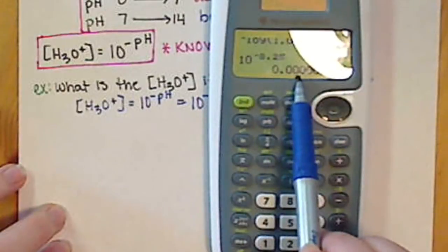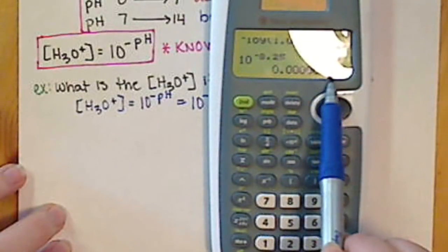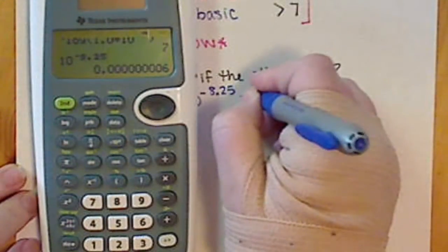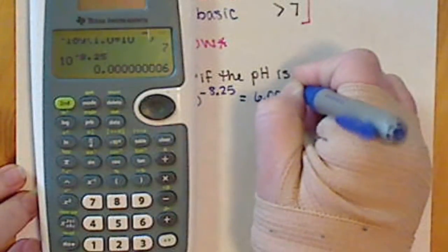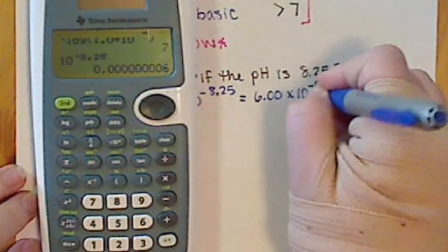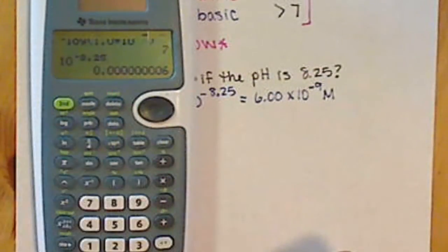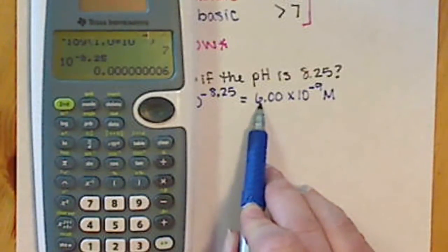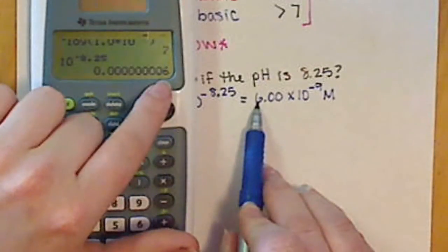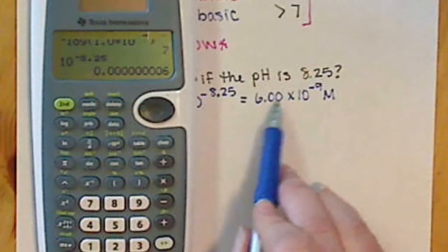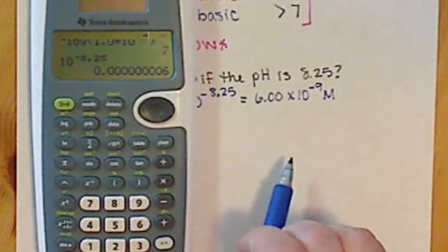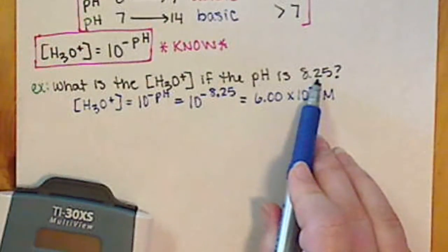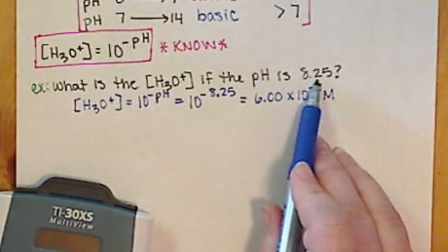Moving the decimal point 9 places to the right gives us approximately 6.00 × 10⁻⁹ molar. I had three significant figures in my pH value, which is why I have three sig figs here. The last digit I know is 6, so I add two zeros to complete my significant figures. Molarity is added as the unit because pH is unitless, but I'm solving for a concentration, and those square brackets mean molarity.